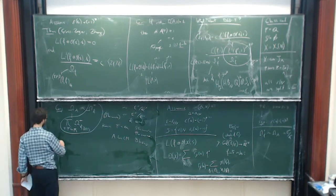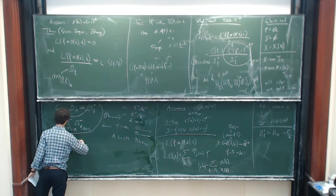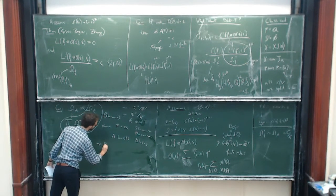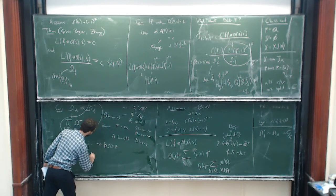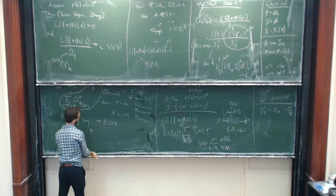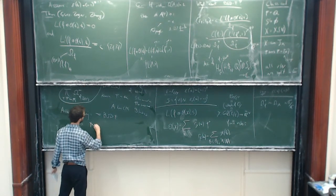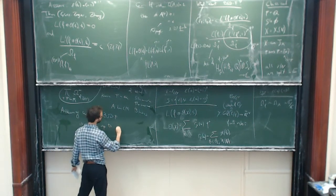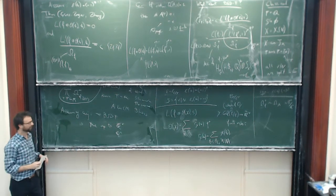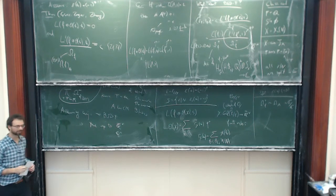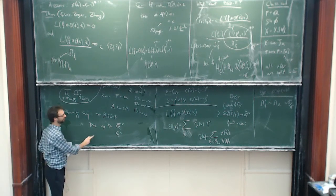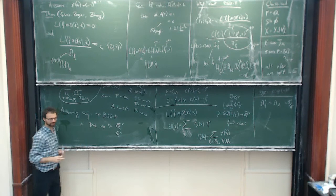Assuming the conjecture, you get that the BSD formula is true up to an algebraic — or if you're careful enough, a rational — number. Now I'm going to come to the title of the talk: the p-adic Gross-Zagier formula. One application is allowing you to say something about p-integrality properties in the BSD formula.